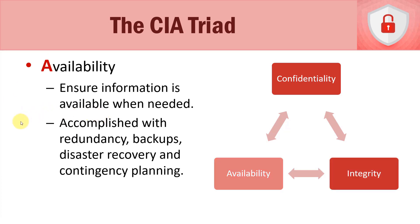Now let's take a look at the last item in the CIA triad, and that's availability. This is one a lot of people probably don't think about, and it is what its name implies. Availability essentially means that our information or data, our network, our systems — whatever it is that we have — is available when it's needed. If our employees need to have access to data, it's available when they need it. If our customers need to have access to data — for example, if it's online banking — then our online banking is available when they need it. A lot of people really don't think about availability; I think they probably take it for granted.